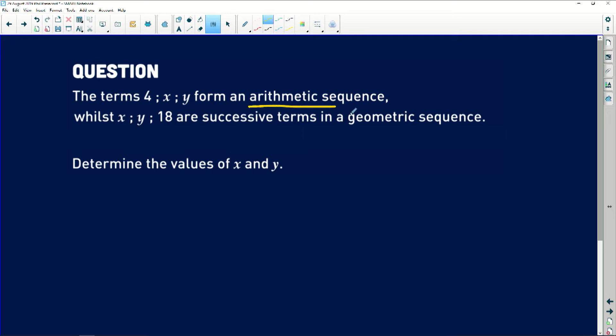Okay, so immediately arithmetic sequence should spring forth that they have a common first difference. Arithmetic is also linear, and that should immediately tell you that there's a common first difference, but how do we express that mathematically? We're going to say that term 2 minus term 1, if we subtract 4 from x, we're going to get a first difference, is equal to if we subtract x from y, term 3 minus term 2. They're going to give us the same answer.